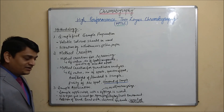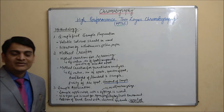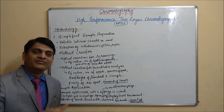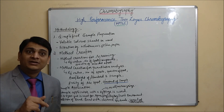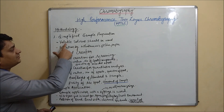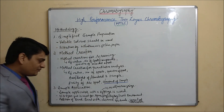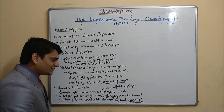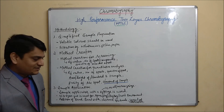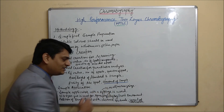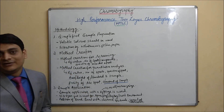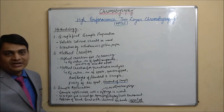Nitrogen gas is used during sample application. Because we are applying a liquid sample, we have to spray it for proper evaporation of solvents present in the sample. Nitrogen gas is used for spraying and it also dries the solvent. Additionally, it provides an inert environment. A nozzle supplies nitrogen gas during application of our sample.